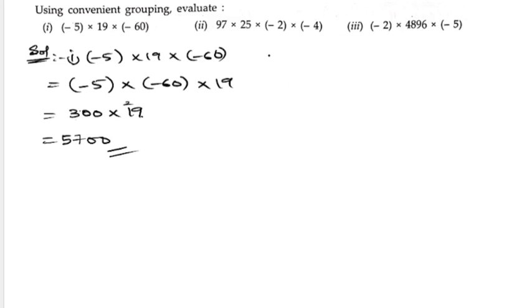Now let us take the second part: 97 × 25 × (-2) × (-4). For my convenience, I want to take 25 and 4 first. Let us write 25 × (-4) × (-2) × 97.